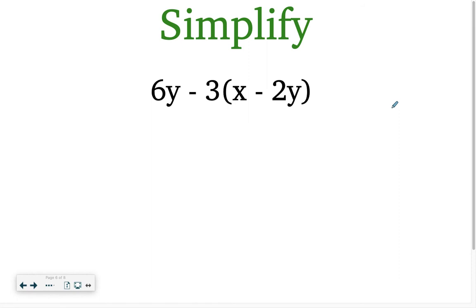All right, now we're going to combine what we learned yesterday with simplifying. So here we have 6y minus 3 parentheses x minus 2y. So again, I'm going to distribute that negative 3 as I go. So I'm going to carry down my 6y. And then negative 3 times x is minus 3x. Negative 3 times a negative 2y is positive 6y.